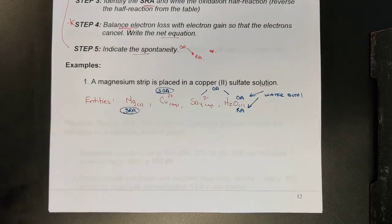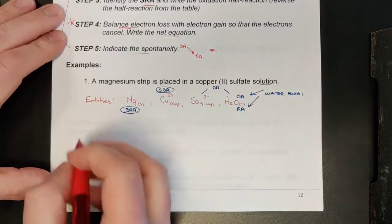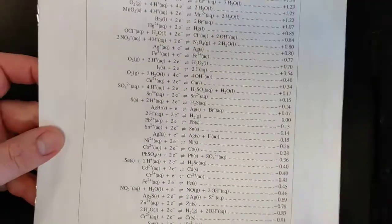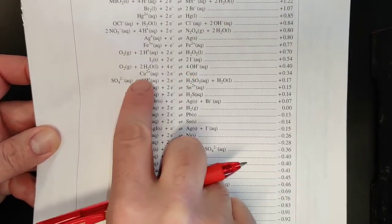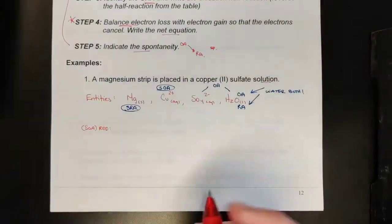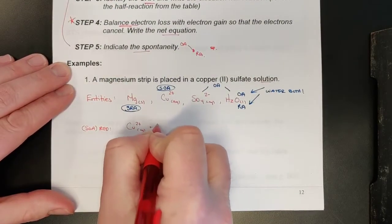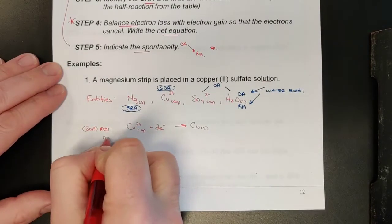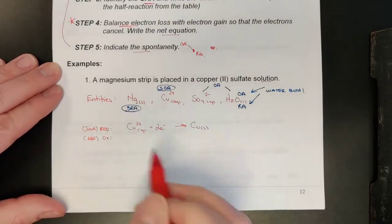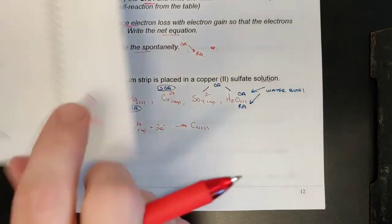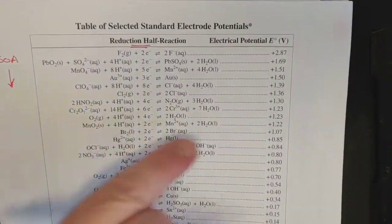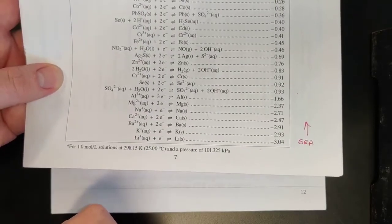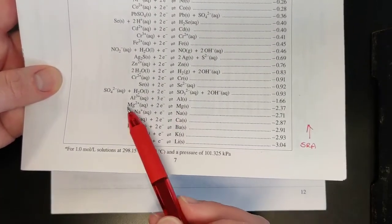Remember, SOAs always get reduced—they undergo reduction. So we write the copper 2+ reduction reaction that we see on the table. Copper 2+ gains two electrons to reduce to copper metal: Cu²⁺ + 2e⁻ → Cu.